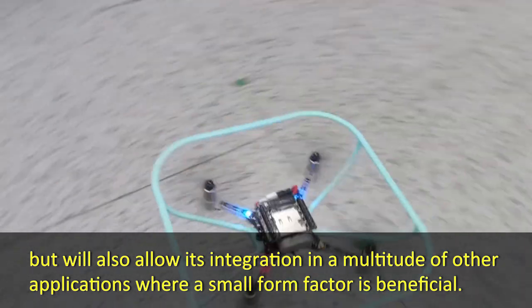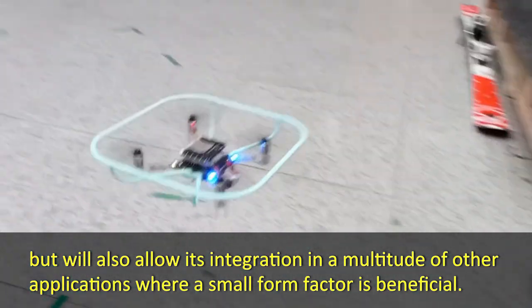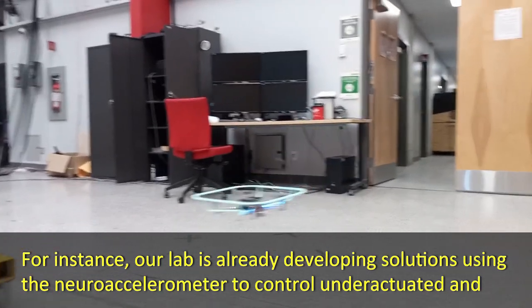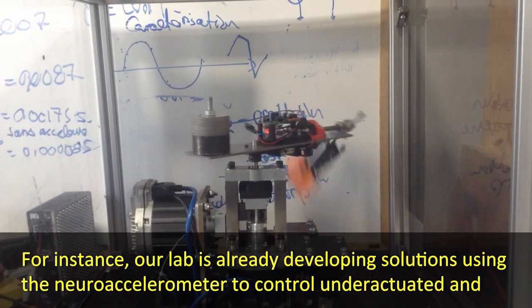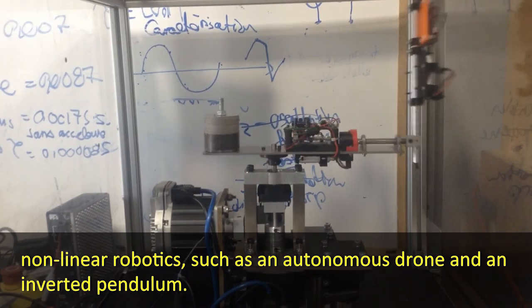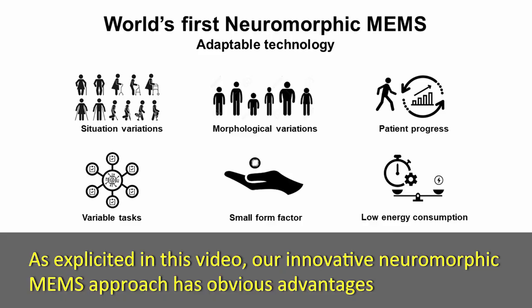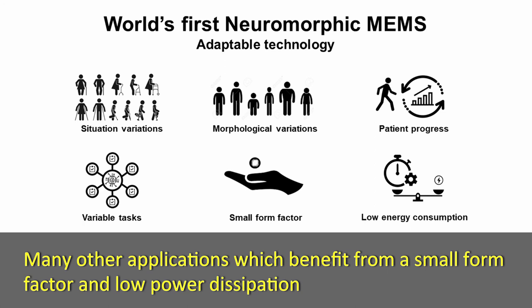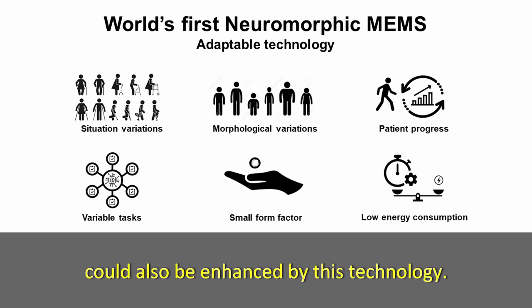This will also allow its integration into a multitude of other applications where a small form factor is beneficial. For instance, our lab is already developing solutions using the neuroaccelerometer to control underactuated and nonlinear robotics, such as an autonomous drone and an inverted pendulum. As explicated in this video, our innovative neuromorphic MEMS approach has obvious advantages in terms of robustness and adaptability for biomechanical applications. Many other applications, which benefit from a small form factor and low power dissipation, could also be enhanced by this technology.